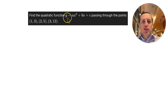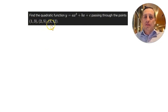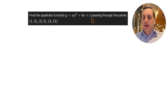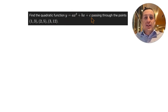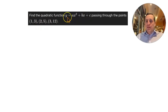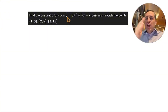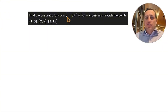Problem five: find the quadratic function Y equals AX² plus BX plus C passing through the points (1,3), (2,5), and (3,12). A, B, and C are unknown constants. We plug each point in for X and Y to get three equations with three unknowns.